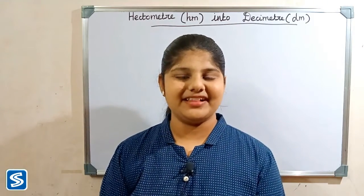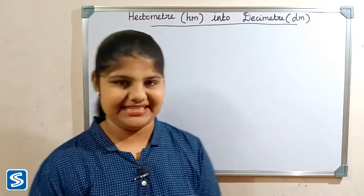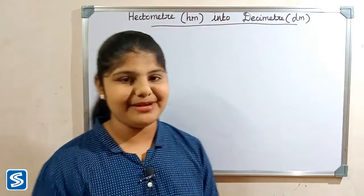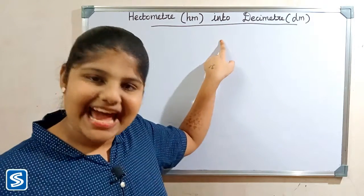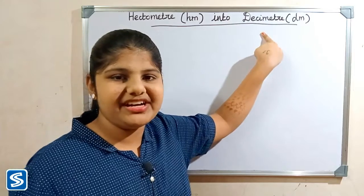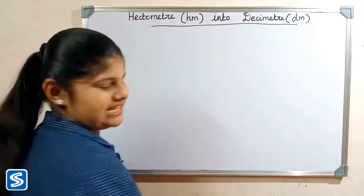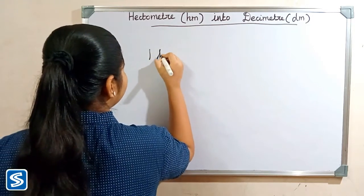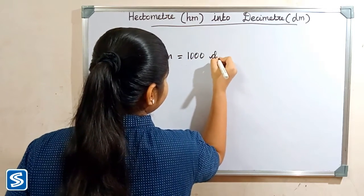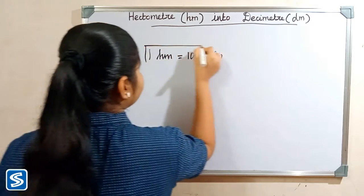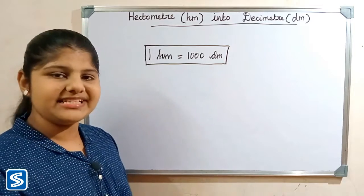Hi friends, welcome to SOM's channel. In this video, I'm going to teach how to convert hectometer into decimeter. Hectometer and decimeter are units of length. The short form of hectometer is HM and the short form of decimeter is DM. The formula for converting hectometer into decimeter is: 1 hectometer is equal to 1000 decimeter. Now we will take some examples.